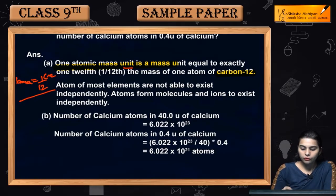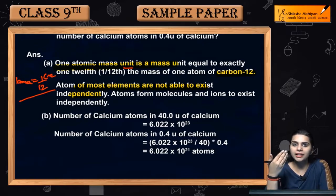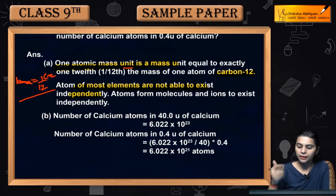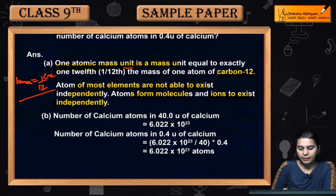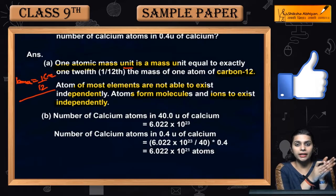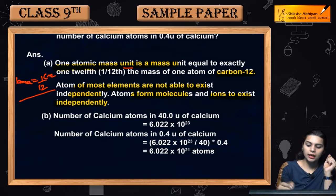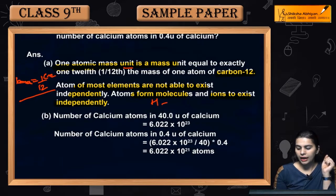So atoms of most elements are not able to exist independently. The atoms are not able to exist independently because they are unstable. Now if they have to independently exist, then how do they do it? Atoms form molecules and ions to exist independently. When our atoms are not able to exist in neutral state because they are unstable, then either they will become molecules or they will become ions.